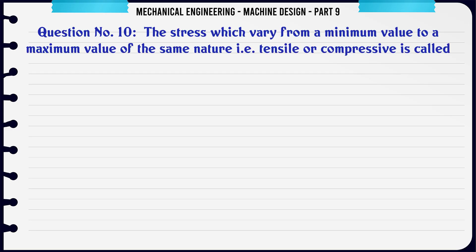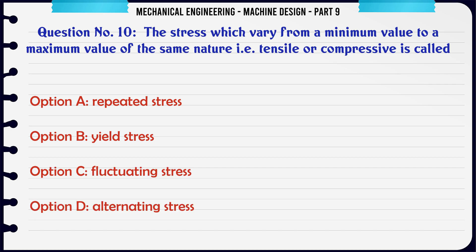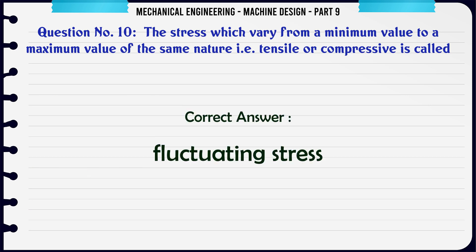The stress which varies from a minimum value to a maximum value of the same nature, i.e. tensile or compressive, is called: A. Repeated stress, B. Yield stress, C. Fluctuating stress, D. Alternating stress. The correct answer is Fluctuating stress.